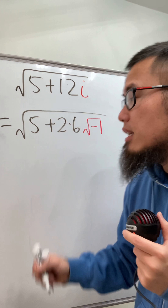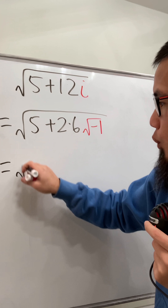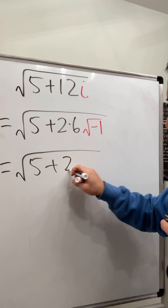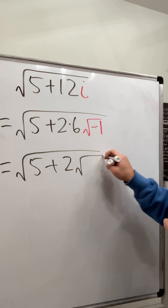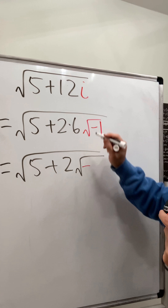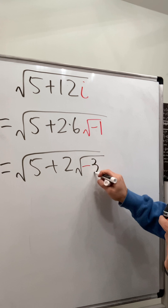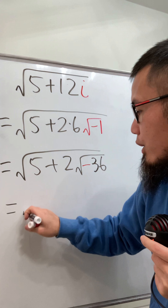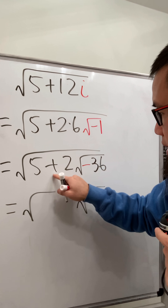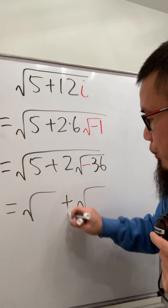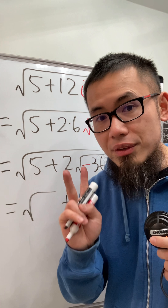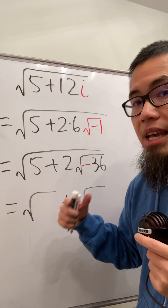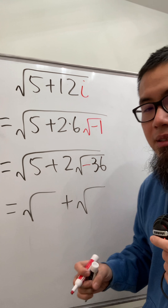We are going to put the 6 inside of this square root, and we know 6 is the same as square root of 36. So all we have now is the square root of 5 plus 2 times the square root of negative 36. Then we are going to open two square roots with the plus in between, and think about two numbers that add to be 5 and multiply to be negative 36.